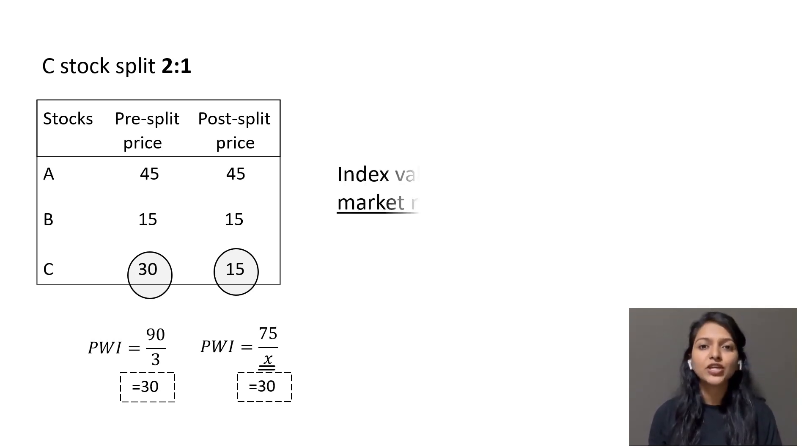The reason for this is index value changes for any market movement and not for a corporate event. So the adjusted divisor ensures that the new value for the index is same as before the split.